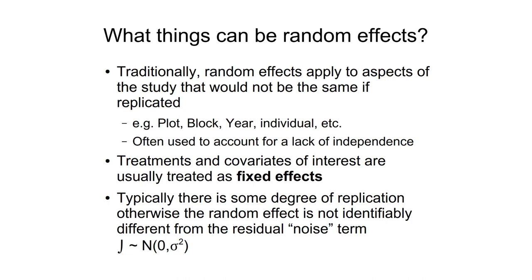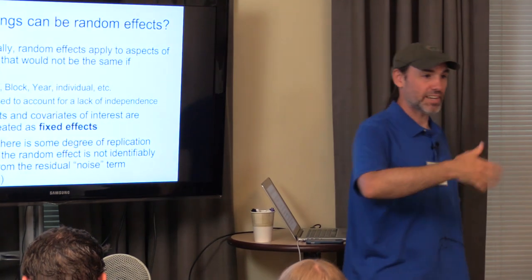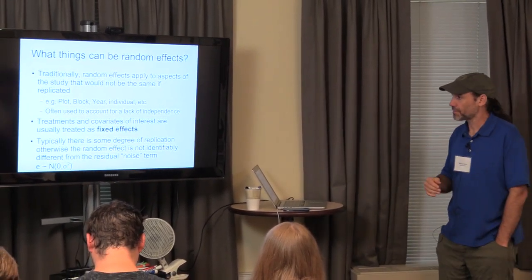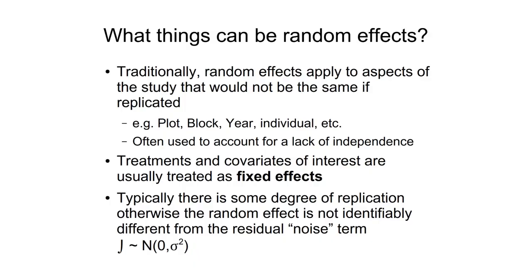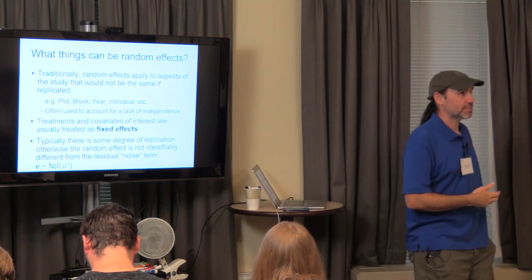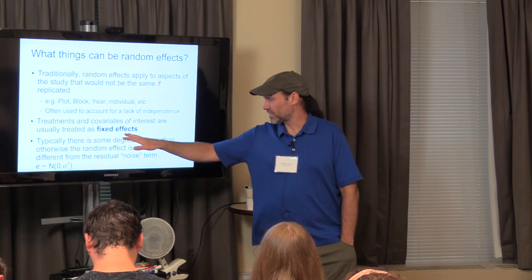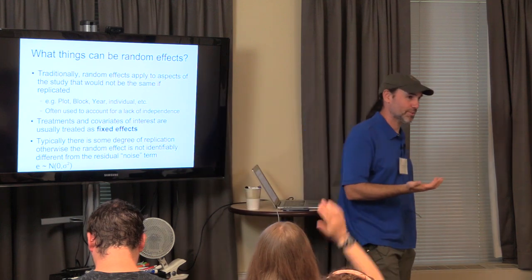What things can be random effects? Random effects are things that would be different if the experiment was replicated — the plots, blocks, years, individuals, study sites. We use random effects as one way of accounting for lack of independence between observations within a block, within a year, or made on the same individual. Treatments, covariates, and things we have hypotheses about are fixed effects. Adding random effects to linear or generalized linear models gives us mixed effects models.